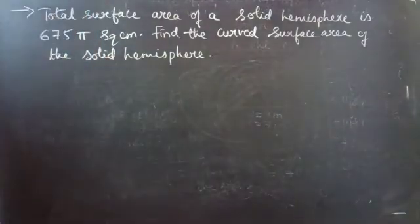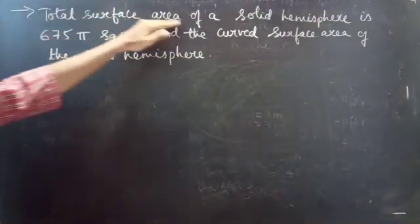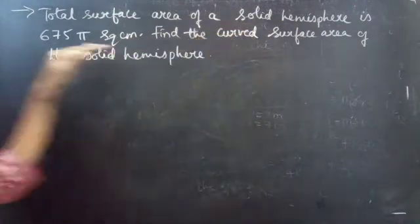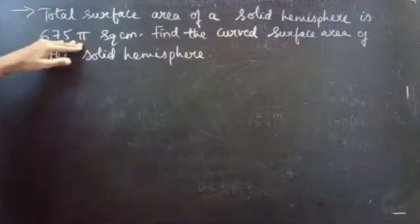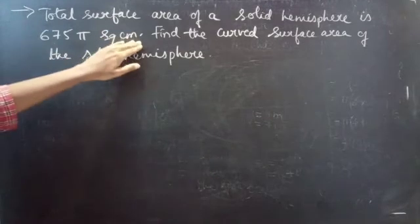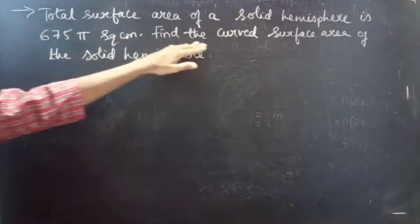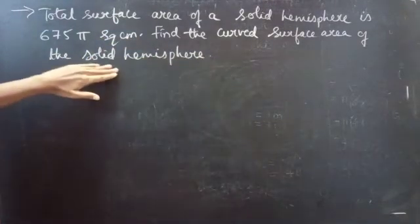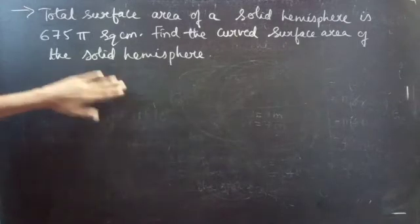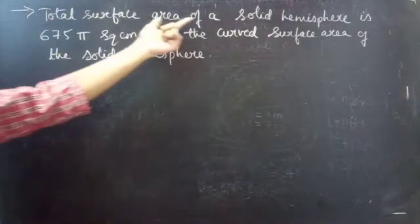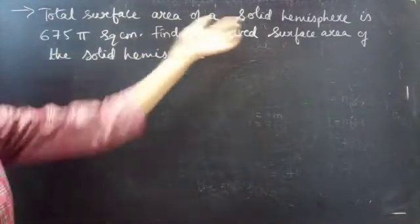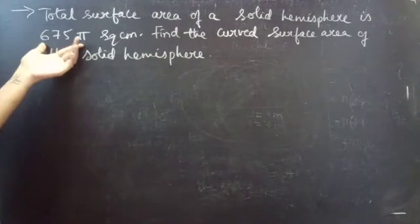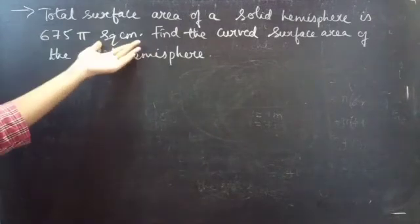Problem: the total surface area of a solid hemisphere is 675 pi square centimeters.